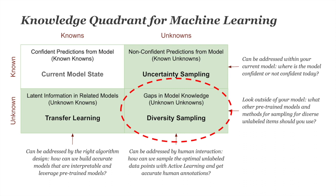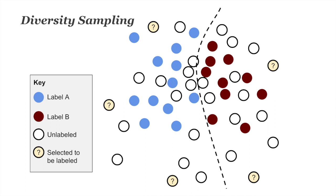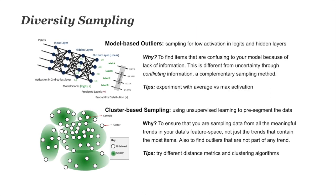We'll now move on to diversity sampling — trying to find what you don't know that you don't know, addressing gaps in your model's knowledge. The hard thing is that you don't know in advance what you don't know. Going back to our binary classification example, diversity sampling looks to sample items that are very different from what has already been labeled and also different from each other. Here are five items sampled through diversity sampling — they're the furthest from what's been labeled so far and different from each other.